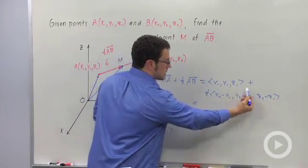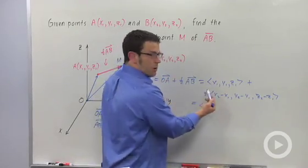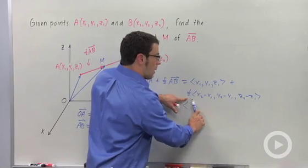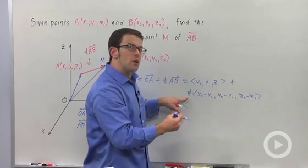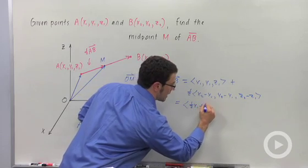So, let's see if we can combine these in a single step. For the first component, I'm going to get x₁ plus a half x₂ minus a half x₁. So a half x₁ plus a half x₂.